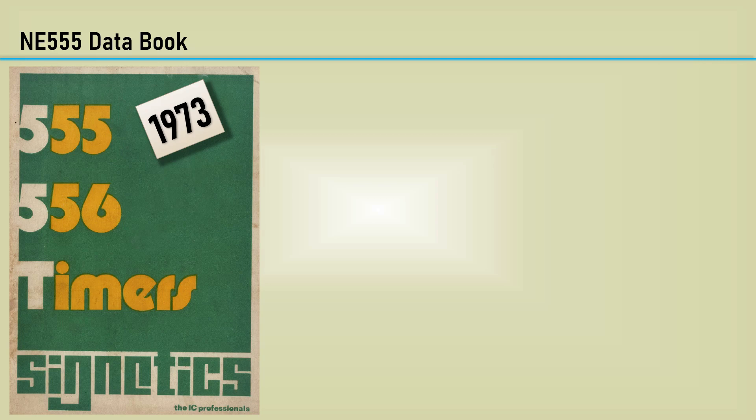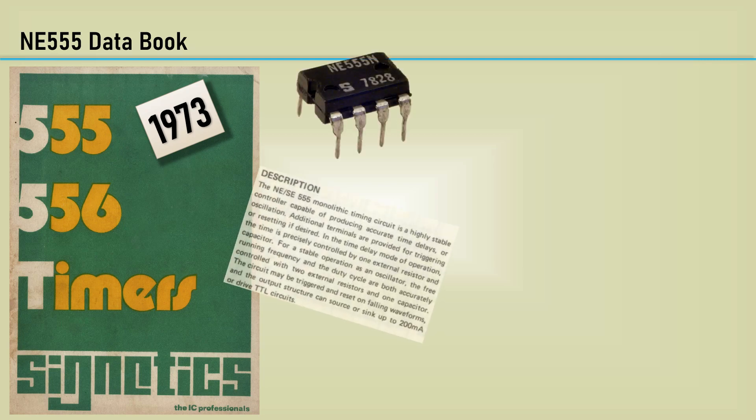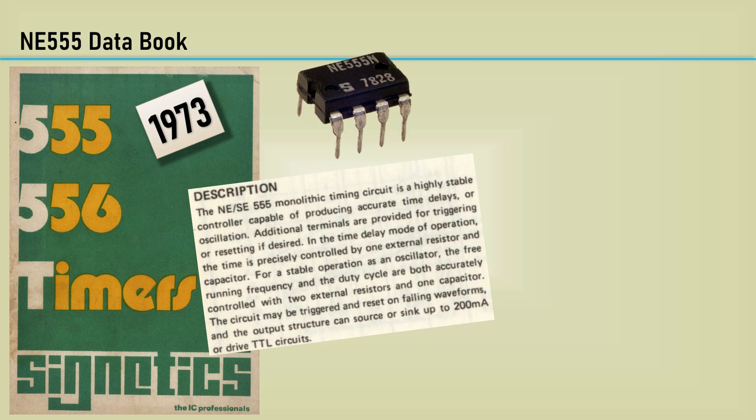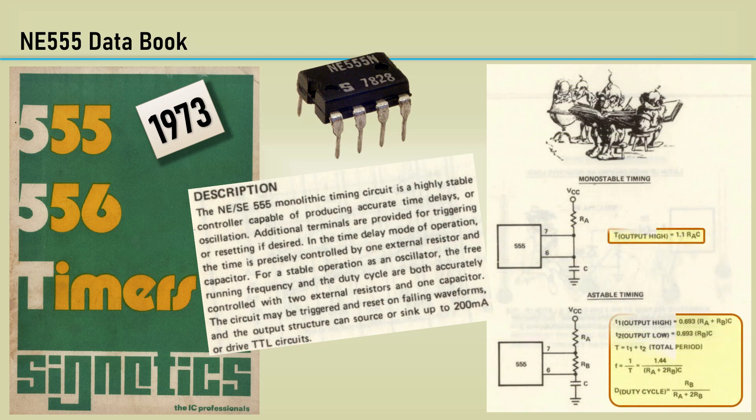Let's move on to electronics. Signetics marketed the 555 timer in 1972, and this is the data book for the 555 and 556 timers dated 1973. It became very popular and billions were sold. One book says it's probably the most popular integrated circuit ever made. This data book has the formulas for the monostable and astable timing shown here. These equations with numeric constants show up as exact copies in modern data sheets. Let's proceed with understanding these constants.